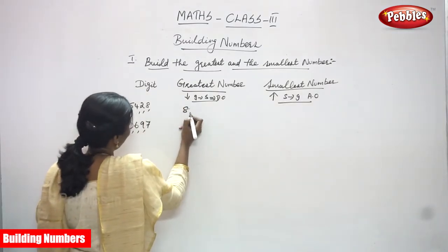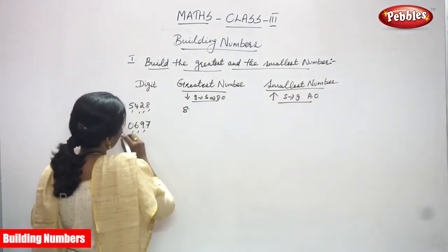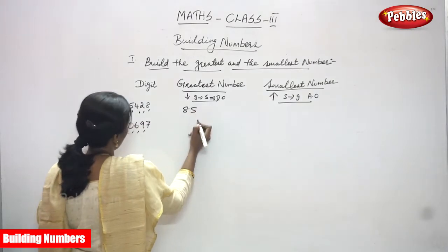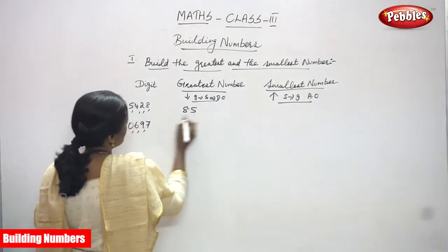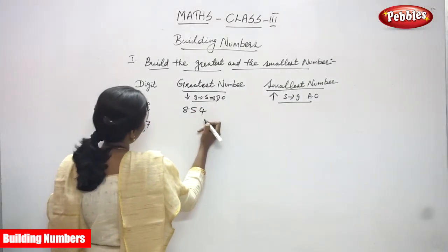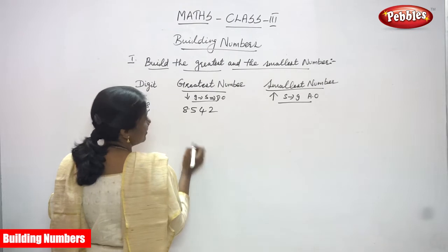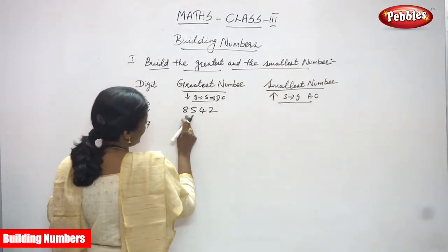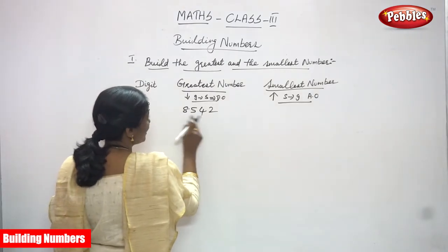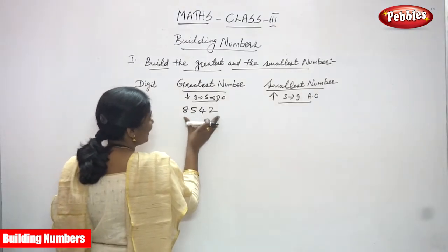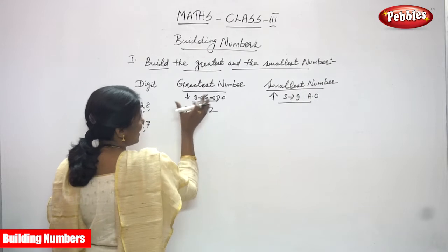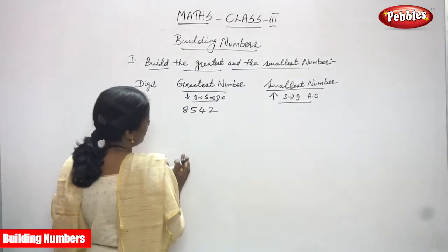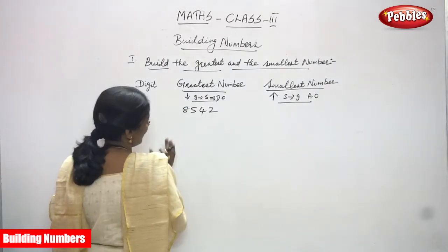So first write 8. Next, the second greatest number is 5. Third is 4. Next is 2 — the least number, that means the smallest. So 8, 5, 4, 2 — this is what we built as the greatest number. This is the right method.